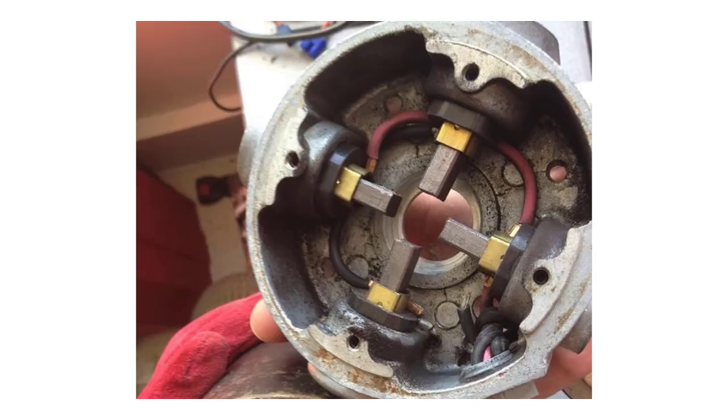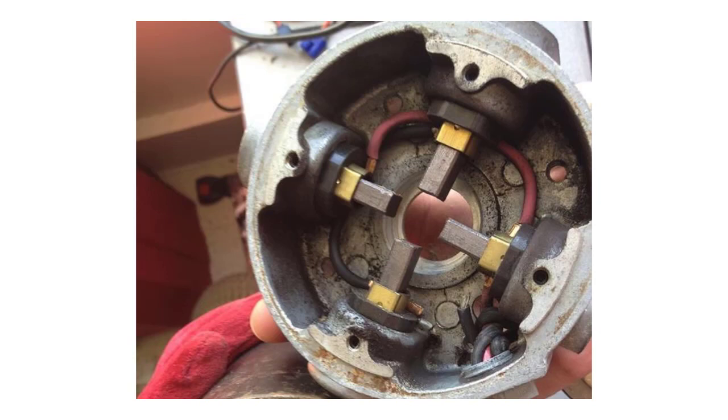The brushes in most electric motors are made from carbon in the form of graphite. Graphite is used as it acts as a lubricant, reducing friction and thus improving the efficiency of the motor.